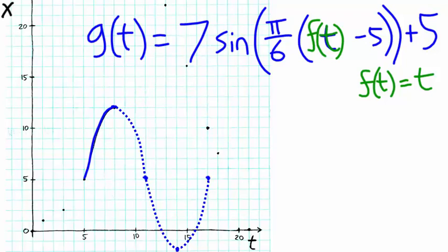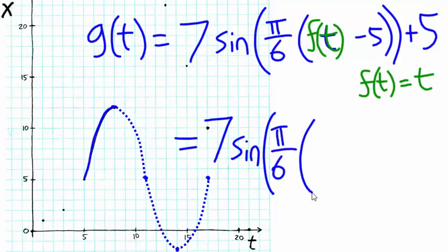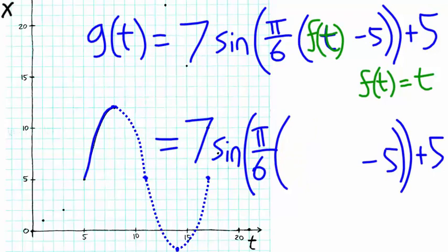Now this is a bit unconventional, but I like to write the same equation graphically like this. This sinusoid equals 7 sine of pi over 6, and I'll leave a little space there, minus 5 plus 5. And in here I'll draw a graph of the function f of t equals t.